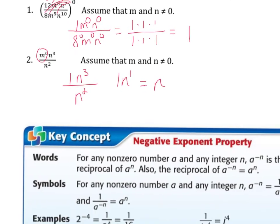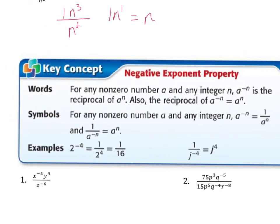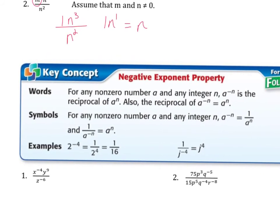Let's take a look at our last key concept: the negative exponent property. Whenever we have a negative exponent, we take the reciprocal and change the exponent to a positive number. So it works both ways. If we have 2 to the negative four, we flip it and make it 1 over 2 to the positive fourth. But if we have 1 over j to the negative fourth, we take the reciprocal of that, which is j over 1, and make the exponent positive — which is just j to the fourth.